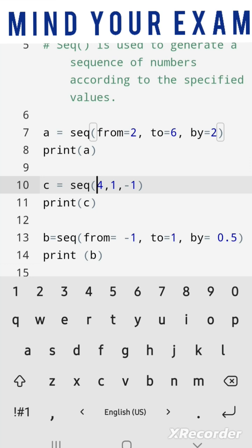In the second case, we have specified minus 1 as the third argument that will result in a descending sequence starting at 4 and the output would be 4, 3, 2 and 1.